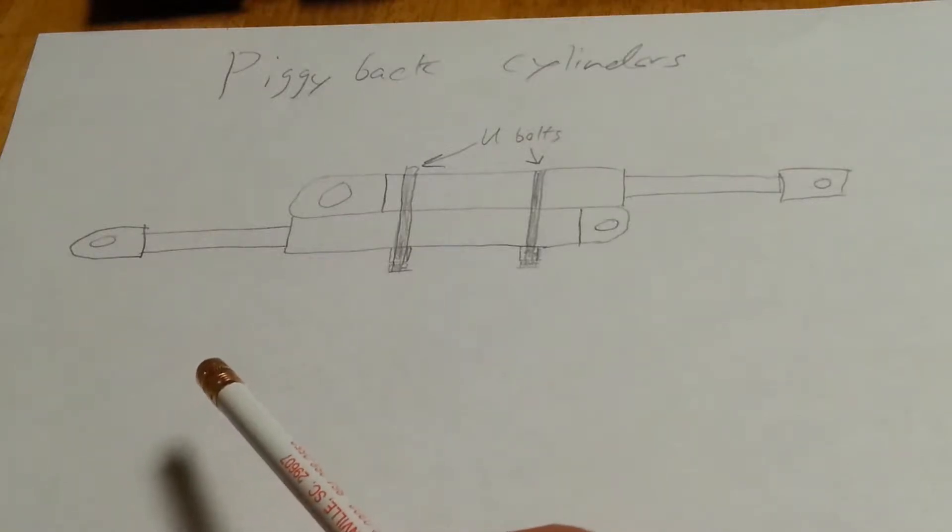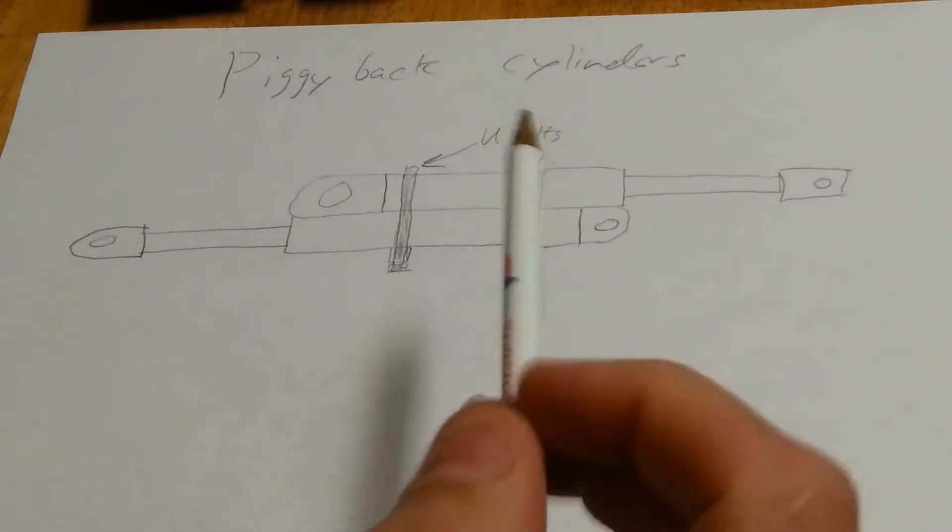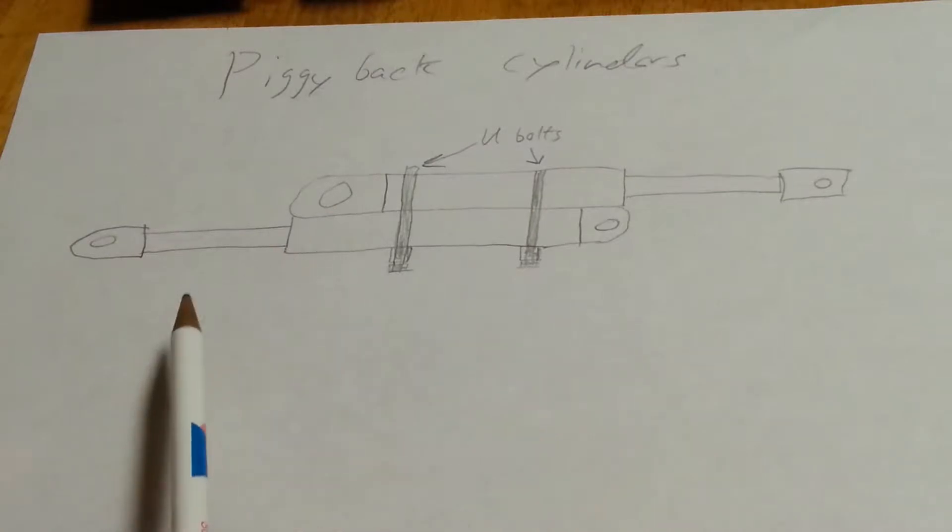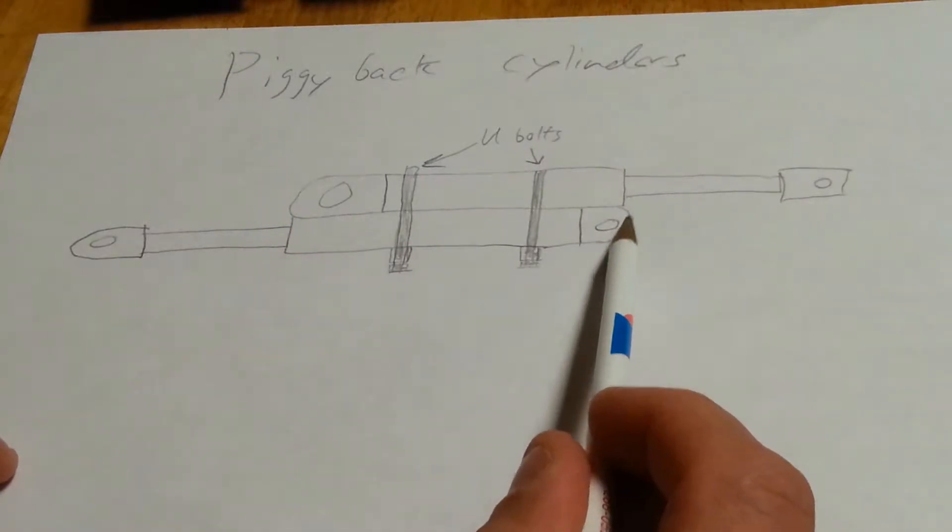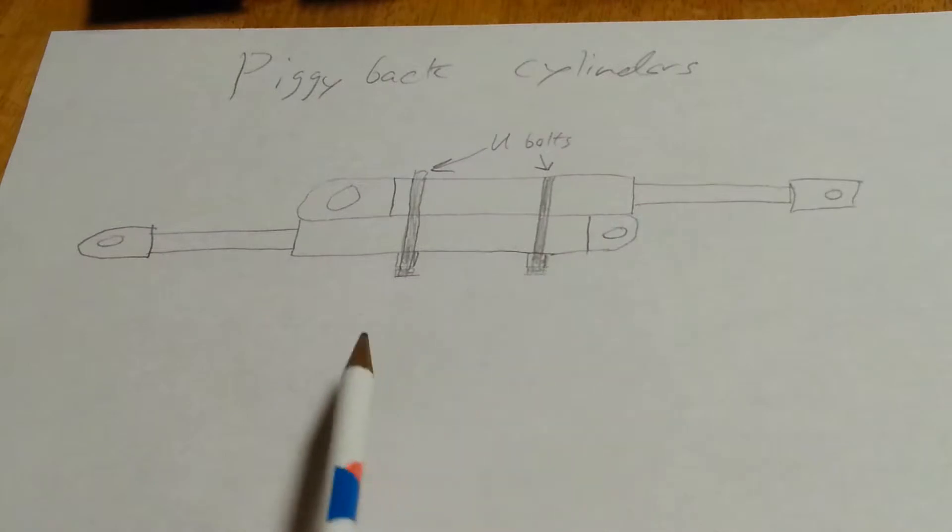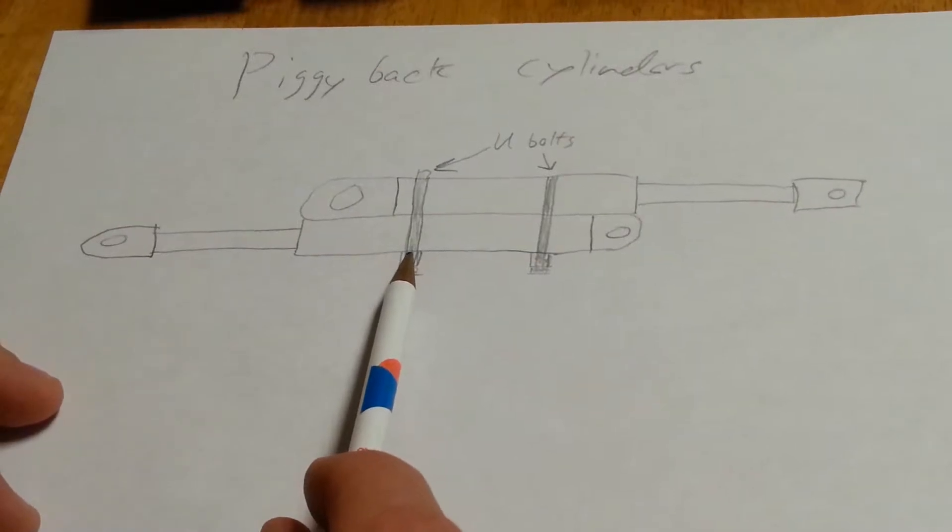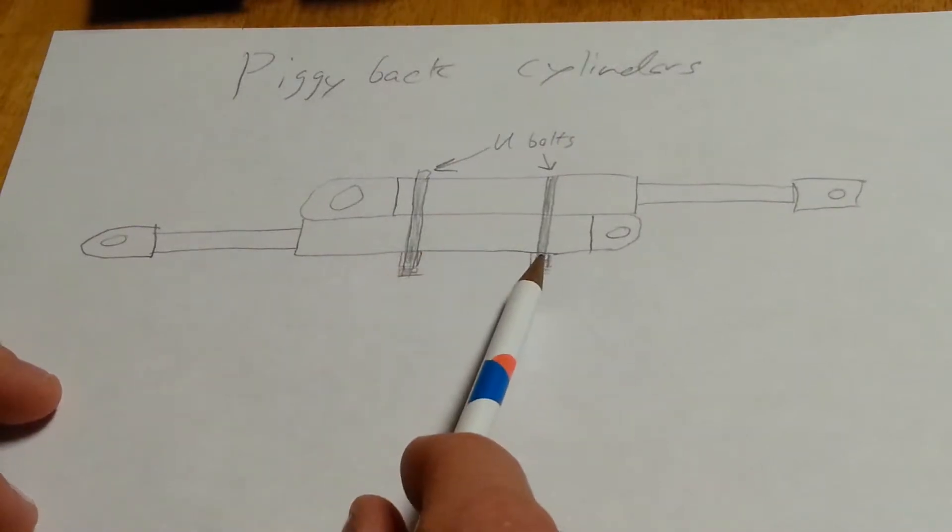The way I built mine, it's been three or four years, to the best of my knowledge. Obviously they oppose each other, and I think I lined up kind of the end of the casing with the end of the other cylinder, and the same here. I put two U-bolts on my setup, one here and one here.